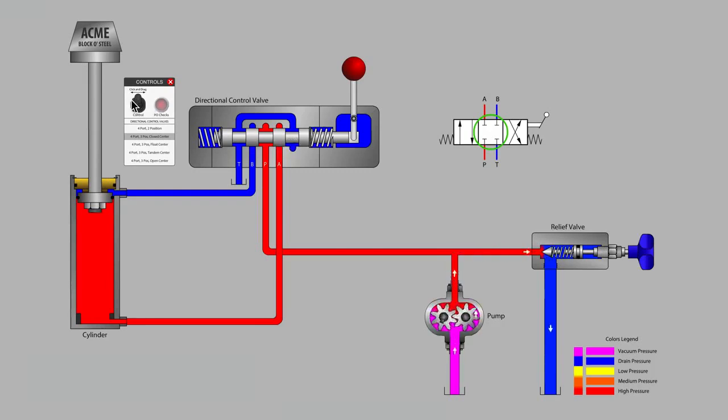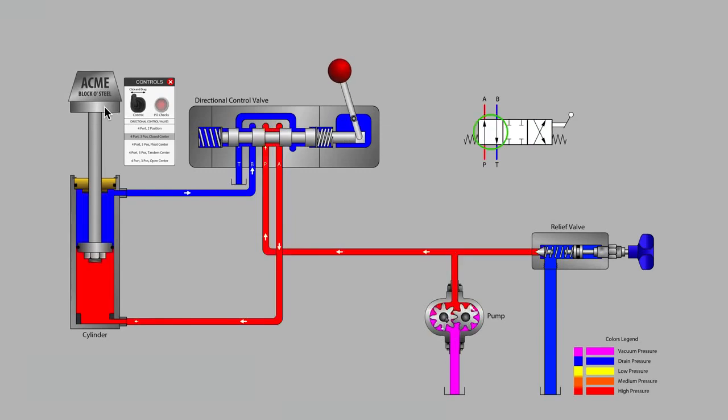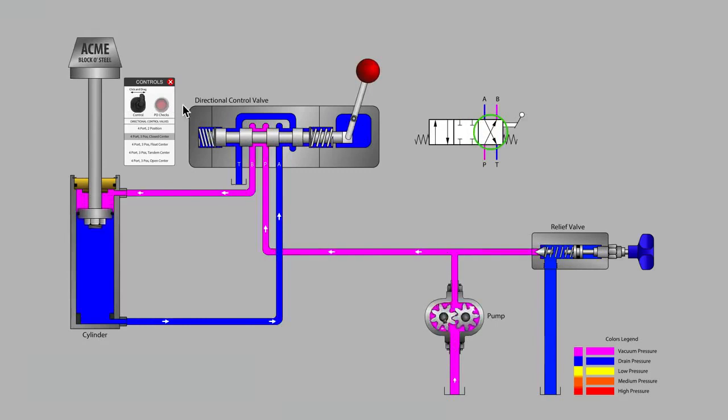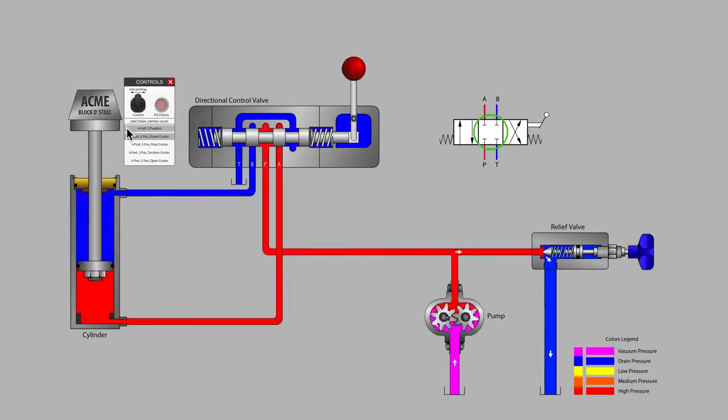Activating the valve shows us that we can provide P-to-A flow to extend the cylinder, or P-to-B flow to retract the cylinder. Releasing the handle shows that we can in fact stop the cylinder mid-stroke. This is a common feature and is desired for many hydraulic systems.